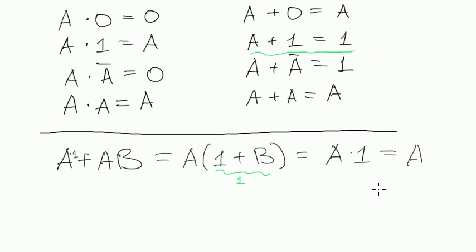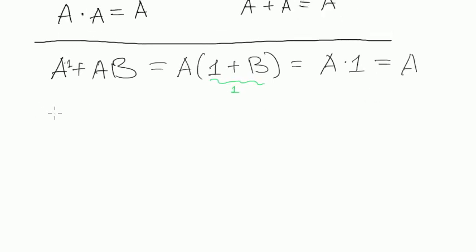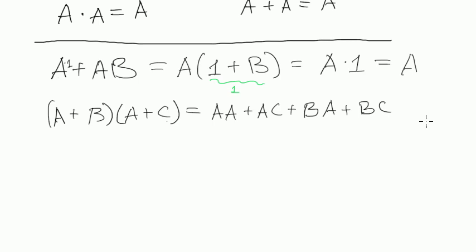Let's do another one. A plus B multiplied by A plus C. So let's start and multiply these two brackets. It would be AA plus AC plus BA plus BC. As you can see, all the rules about how you open brackets and how you flip around variables are the same as in algebra of real values.